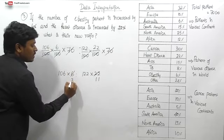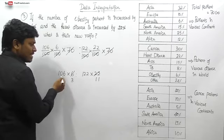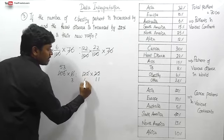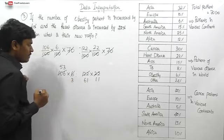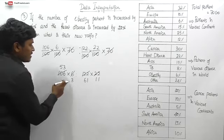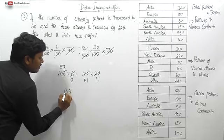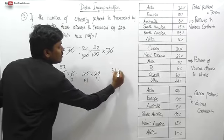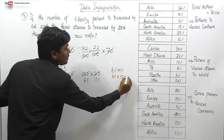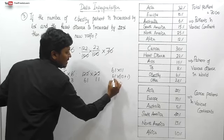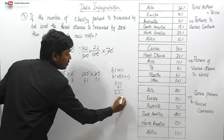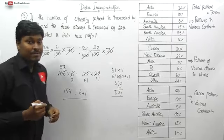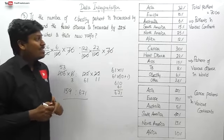Canceling 70, 100, and 100 from both sides, we are left with 106 into 6 ratio 122 into 22. Simplifying: 106 into 6 = 636; 122 into 22. We can cancel by 2: 53 into 3 : 61 into 11. That gives 159 : 671. So the ratio for question number three is 159 : 671.